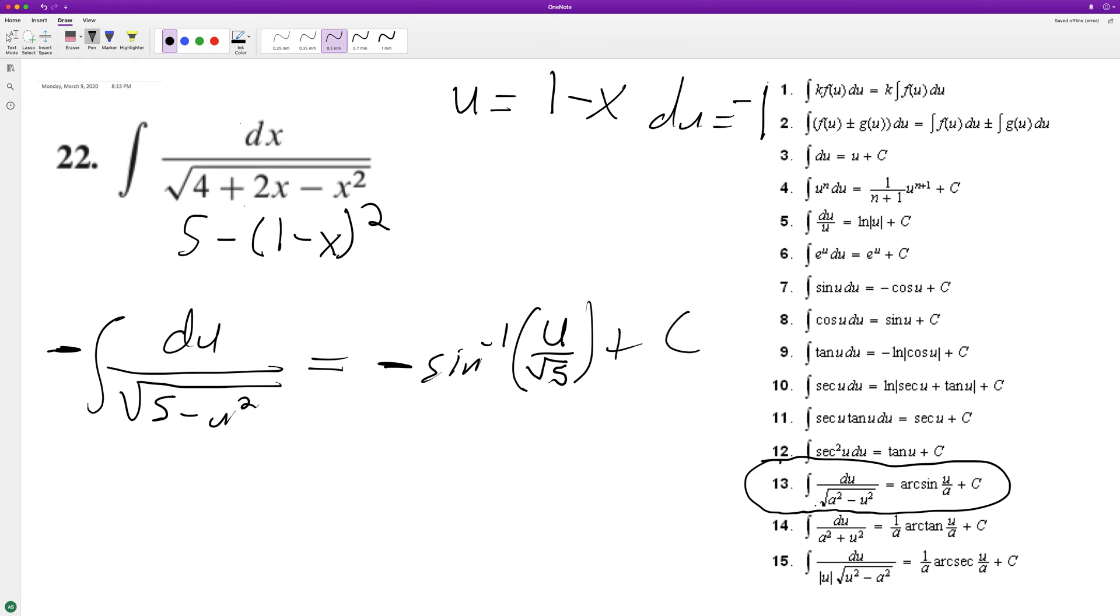And then we're going to get plus c. Substitute back in, we get negative sine of one minus x over the square root of five plus c.